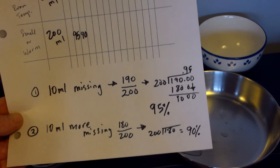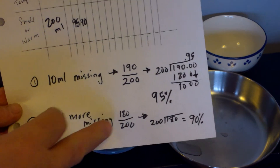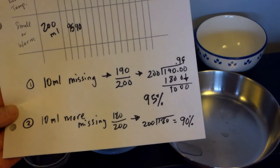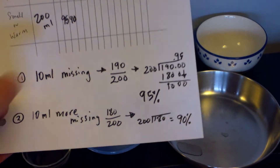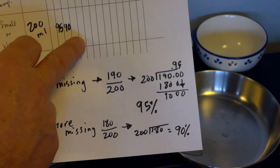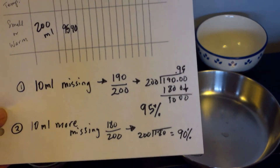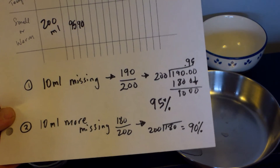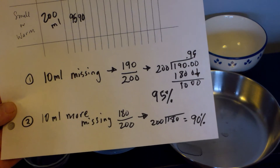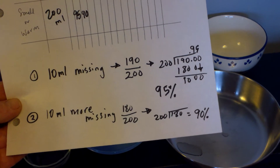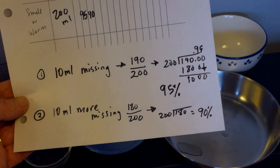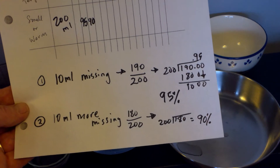Say on day two you lost 10 more milliliters of water — now you've got 180 over 200, which works out to 90 percent, and that goes in for day two. You're just going to keep going. You don't have to lose all the water, but you need some data. There are 13 days of space here for you to mark all that down.